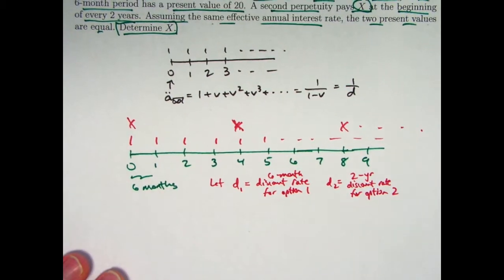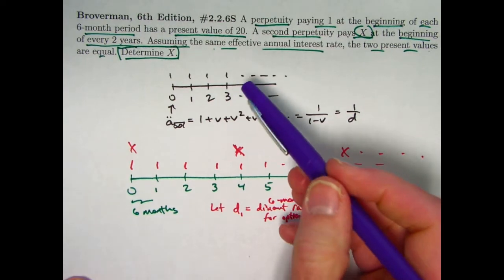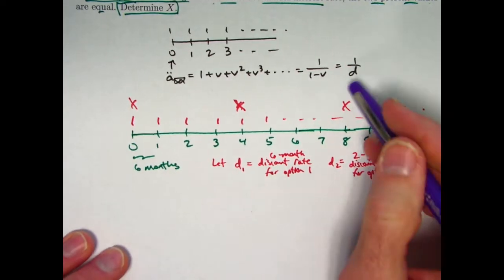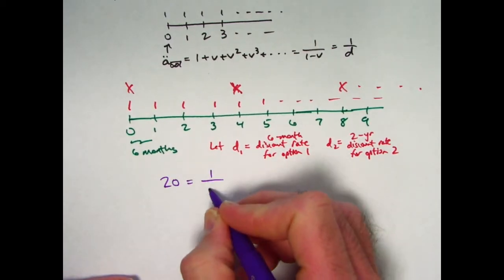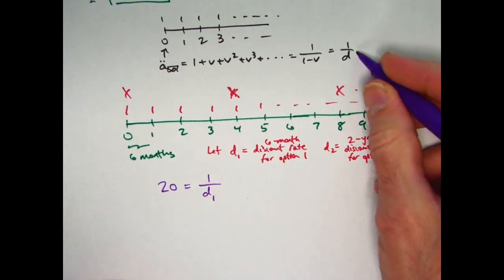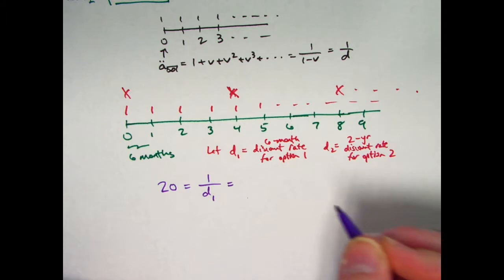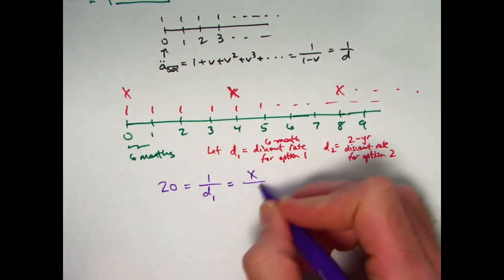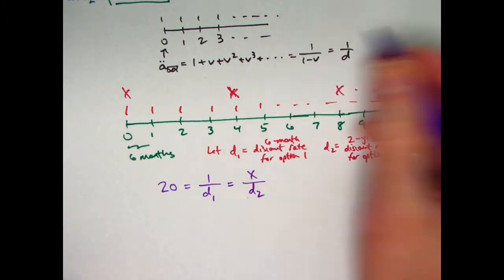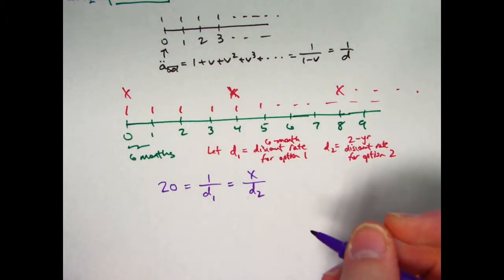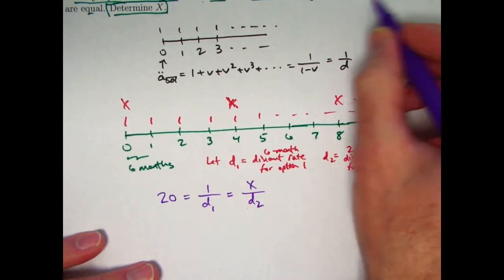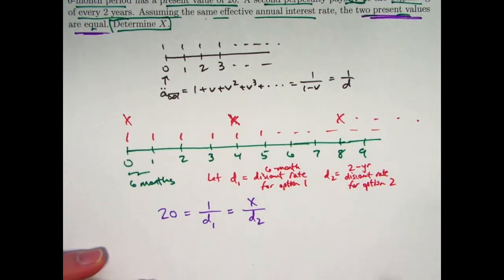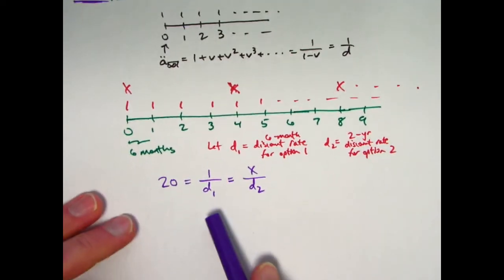All right, now use the given information that they both have a present value of 20. And this formula, 20 will equal certainly 1/d1 by this formula. It will also equal x/d2 by the same formula, except now the payments are x. But keep in mind again, d1 is a six-month discount rate and d2 is a two-year discount rate, but these equations are both true. They both have the same, the two present values are equal.